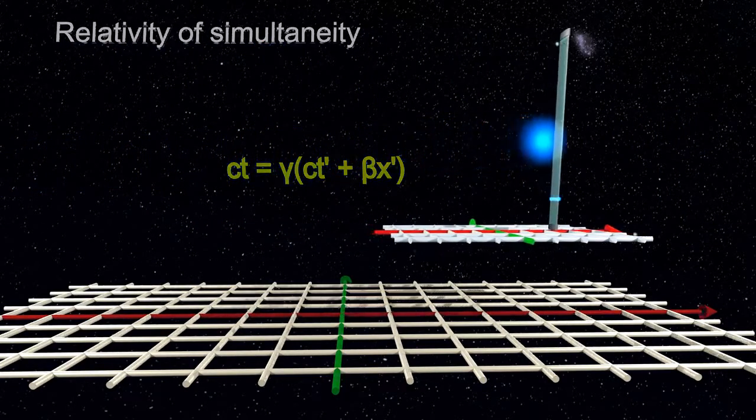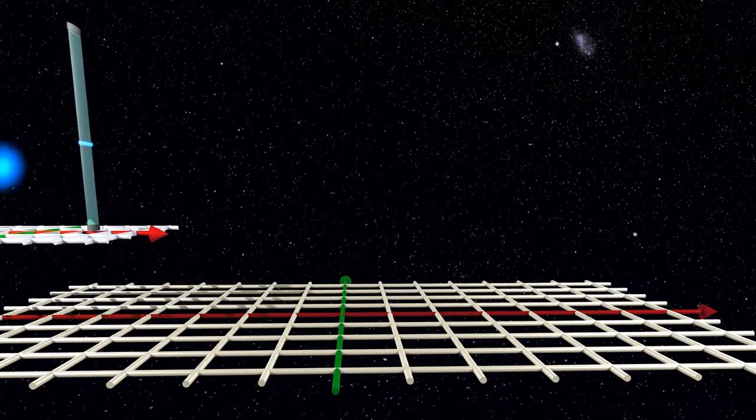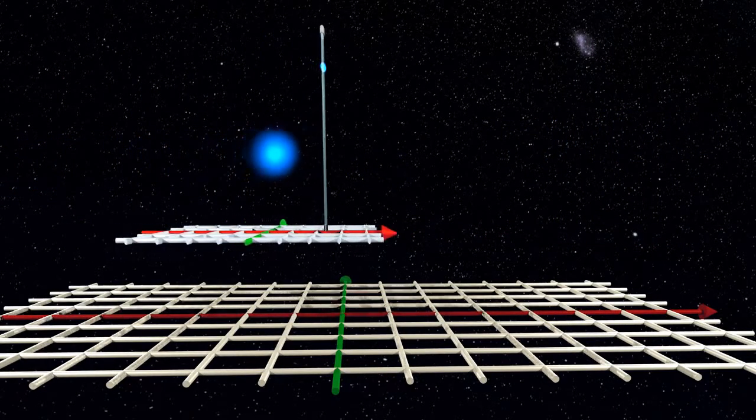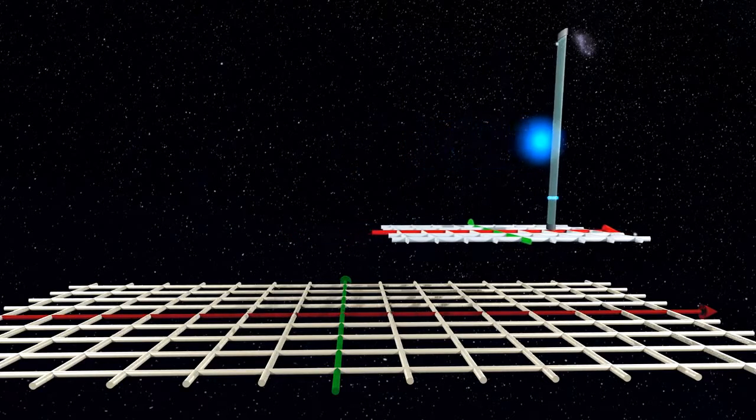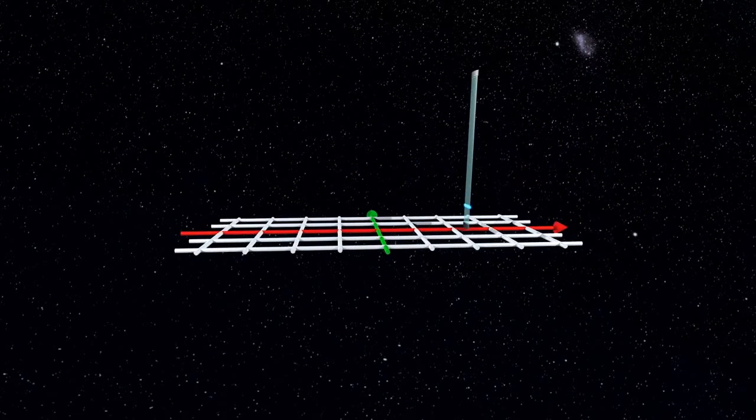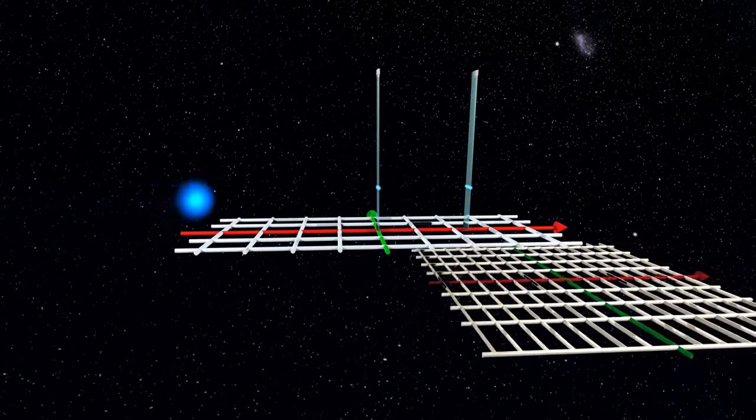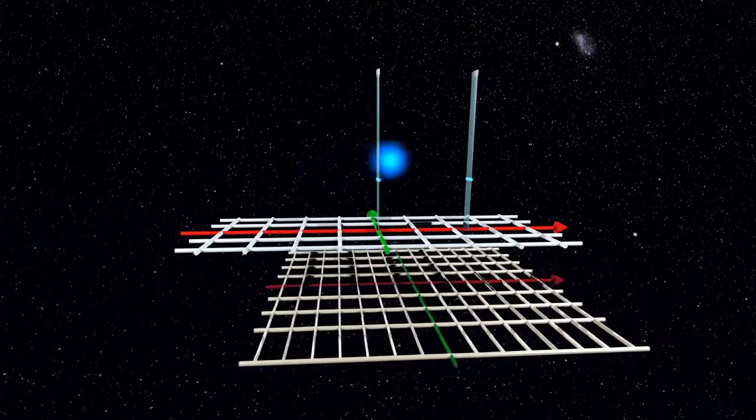All we need is a way to visually tell time from one frame to another. In the moving frame, let us add another light clock located at the origin and synchronous with the one at the event location.